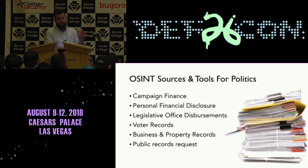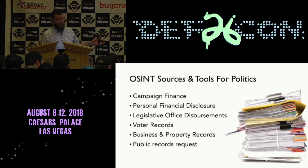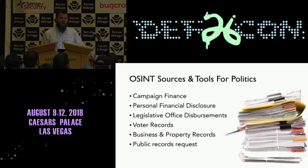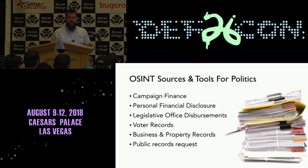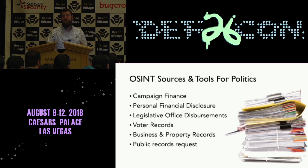Personal financial disclosures are a great tool for being able to look into how an individual reports and lives out their likely very wealthy existence. Legislative office disbursements — this is something I don't often find a lot of information on, but when you do find something of value, it's usually something very big. One of the case studies — everything that brought down a politician was found in publicly recorded office disbursements. Voter records — every person who is registered to vote, all their information is a public record. A lot of it is online, and sometimes you might have to go and ask for these records, but they're mostly free.